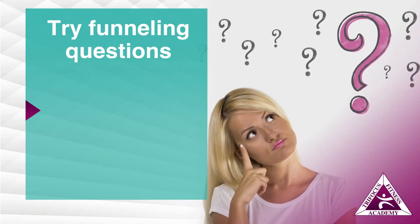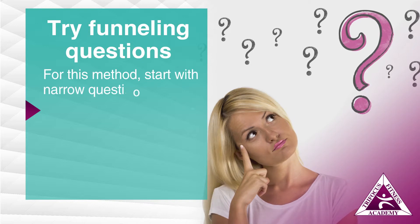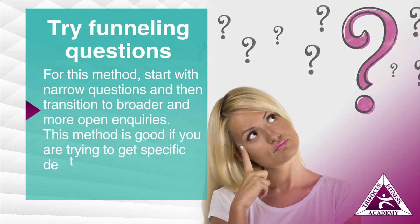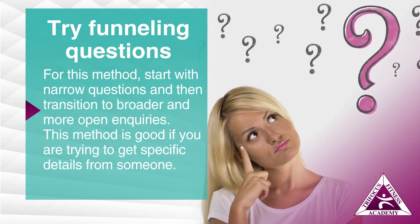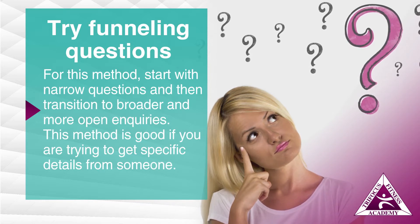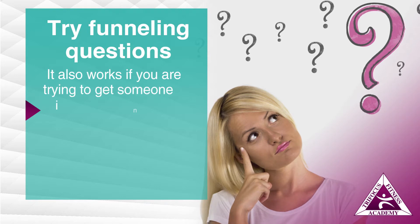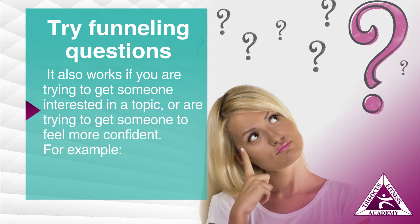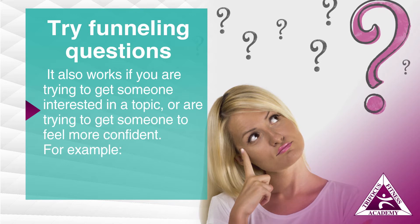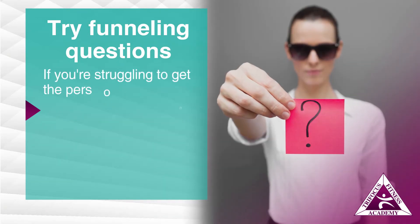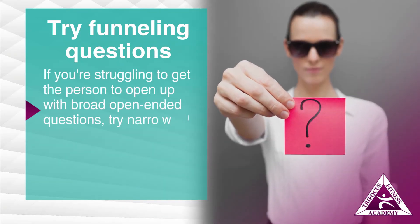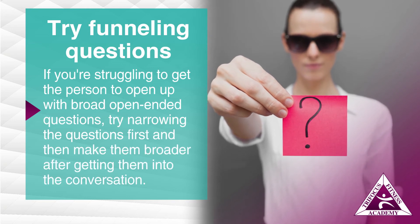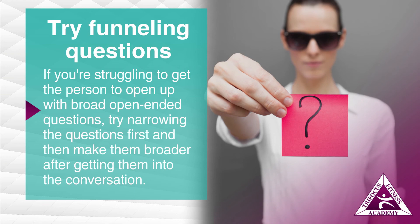Try funneling questions. For this method, start with narrow questions and then transition to broader and more open inquiries. This method is good if you're trying to get a specific detail from someone. It also works if you're trying to get someone interested in a topic or are trying to get someone to feel more confident. For example, if you're struggling to get the person to open up with broad open-ended questions, try narrowing the questions first and then make them broader after getting them into the conversation.